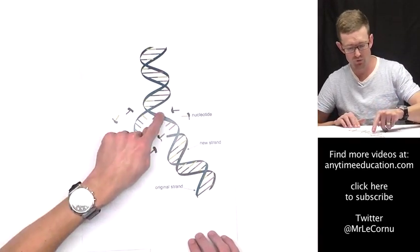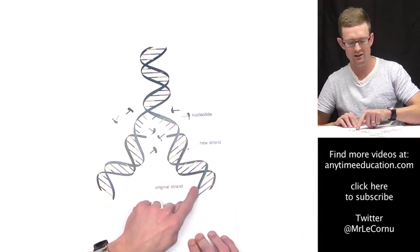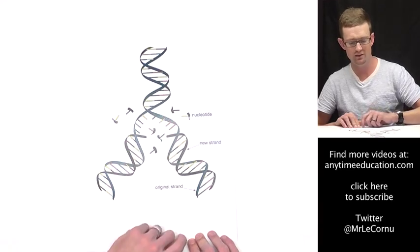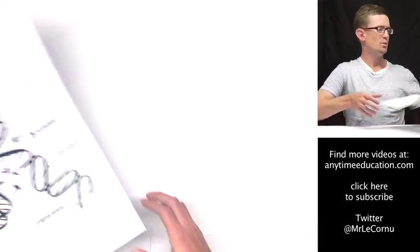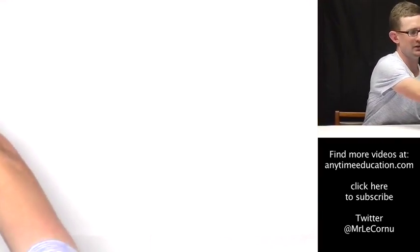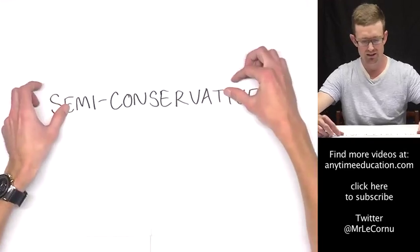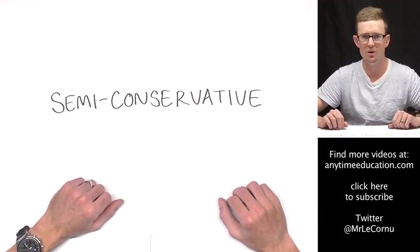They're made up of one original strand, or old strand, and one new strand. Because of the way it occurs, we've got a special name for DNA replication: we call it semi-conservative replication.